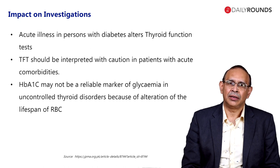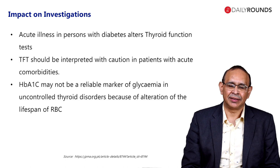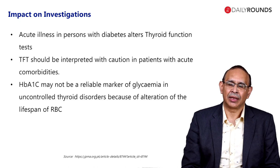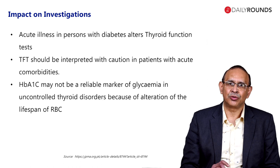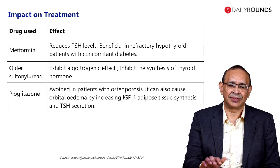Also, in routine diabetes care we use HbA1c as a reliable marker for glycemia. But its reliability is impaired in patients with hypothyroidism and even with hyperthyroidism. This is because the turnover of RBCs changes in thyroid disease — the RBC lifespan changes — and that leads to alterations in HbA1c reporting.